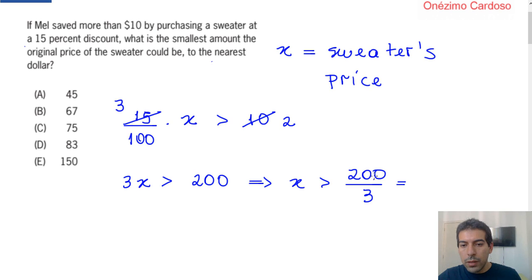If we divide 200 by 3, we get approximately 66.66. If we round to the nearest dollar, we get that this value must be 67. So the correct answer to this question is letter B.